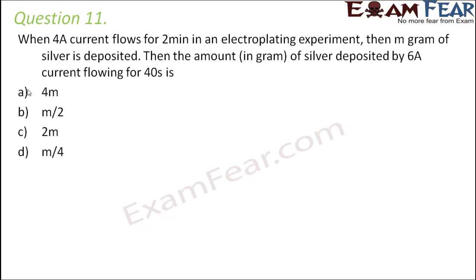Question number 11. When 4 ampere current flows for 2 minutes in an electroplating experiment, m grams of silver is deposited. Then the amount in grams of silver deposited by 6 ampere current flowing for 40 seconds is?